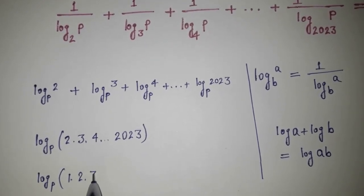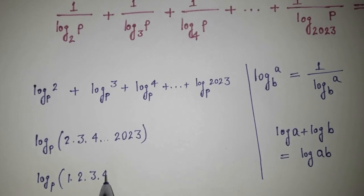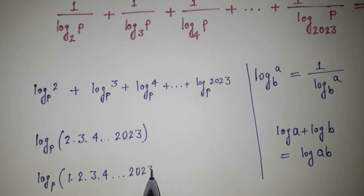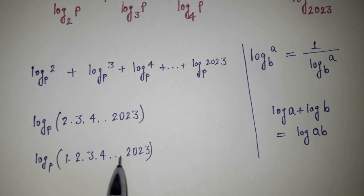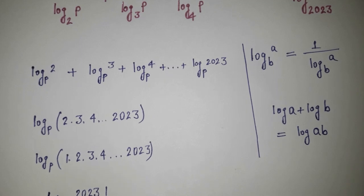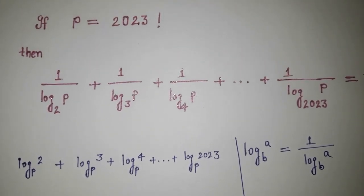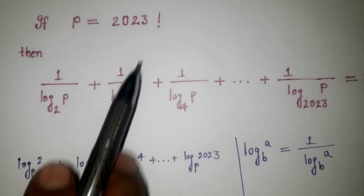2, 3, 1, 2, 3, 4, dot dot dot and 2023 like that. And it becomes what? Factorial of 2023. So we can write instead of here, factorial 2023. And we have given the condition in the beginning that P equals 2023 factorial.